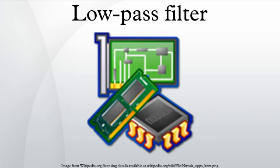However, the ideal filter is impossible to realize without also having signals of infinite extent in time, and so generally needs to be approximated for real ongoing signals, because the sinc function's support region extends to all past and future times. The filter would therefore need to have infinite delay, or knowledge of the infinite future and past, in order to perform the convolution. It is effectively realizable for pre-recorded digital signals by assuming extensions of zero into the past and future, or more typically by making the signal repetitive and using Fourier analysis.